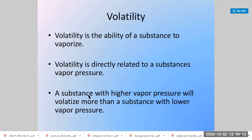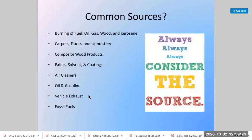Volatility is the ability of a substance to vaporize, and it is directly related to vapor pressure. Substances with high vapor pressure are more volatile than substances with lower vapor pressure. The most common sources of volatile organic compounds are burning of any fuel, oil, gas, wood, or kerosene.